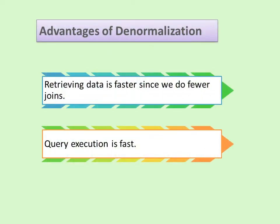Advantages of denormalization: retrieving data is faster since we do fewer joins, and query execution is fast — we can easily execute queries.